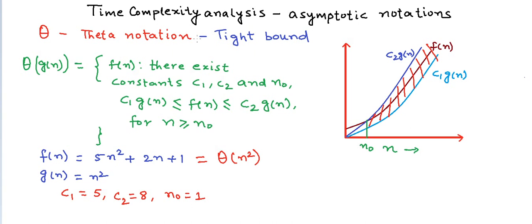So these were the three asymptotic notations that we use for time complexity analysis. In coming lessons, we will pick up different kinds of algorithms — including complex ones like recursion — and see how to analyze and deduce asymptotic notation expressions for them.